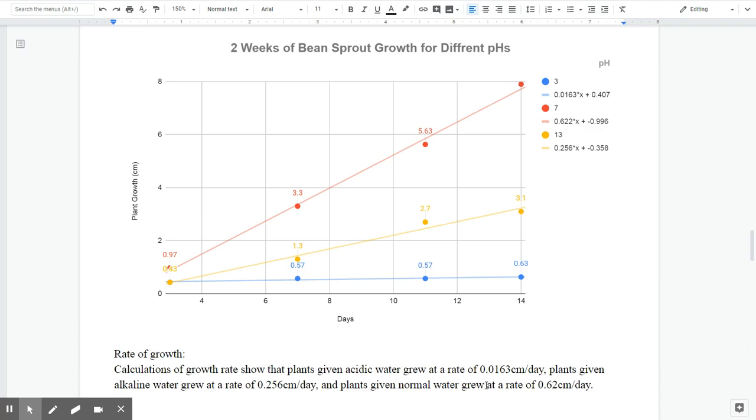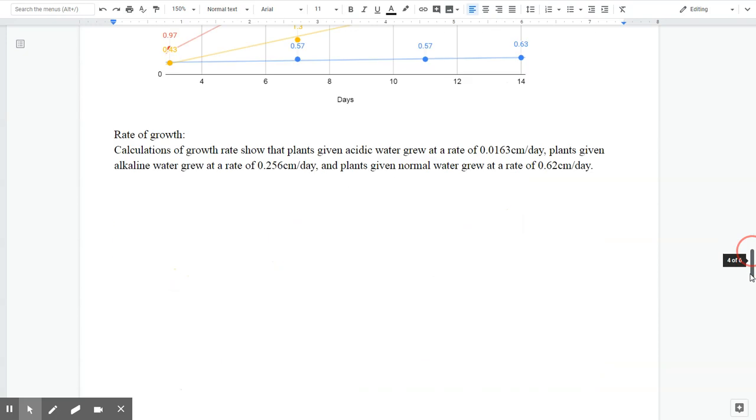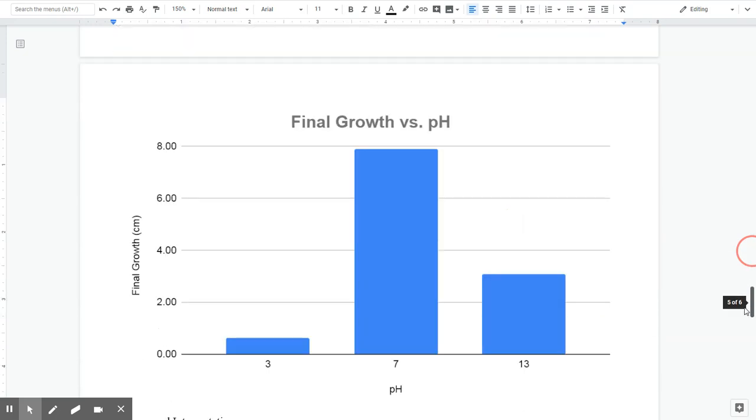Let's see how that looks like in the example that we've been tracking. Remember, we're looking at bean sprout growth with water at different pHs. And you can see that the pH of 7 grew much faster and much more than the pH that was alkaline, 13, or pH of 3 that was acidic.